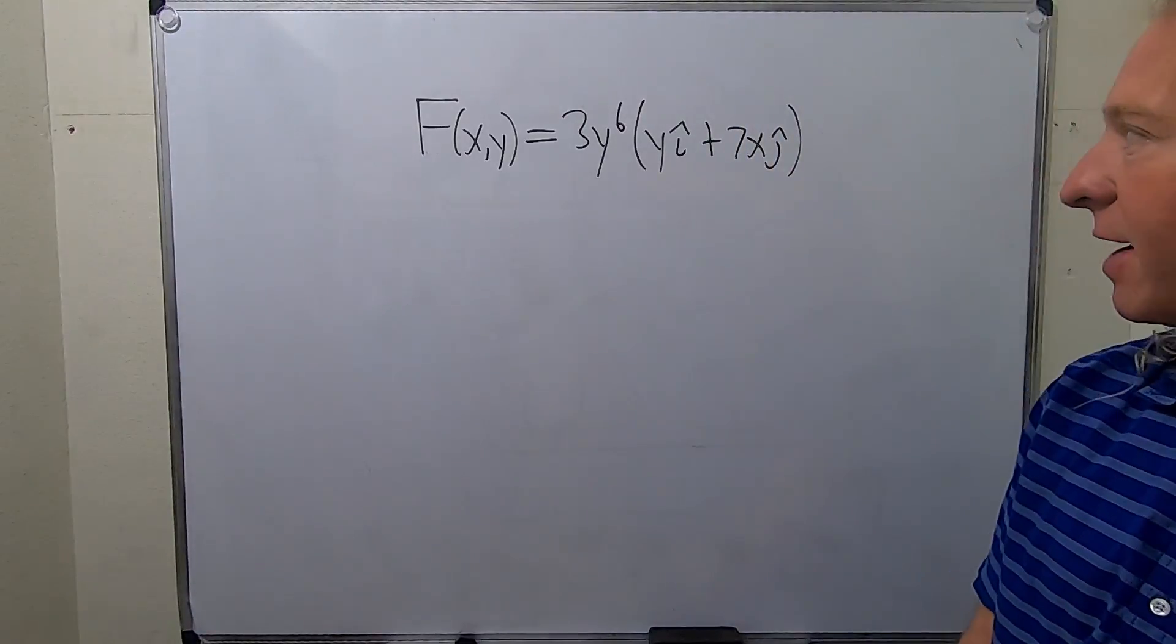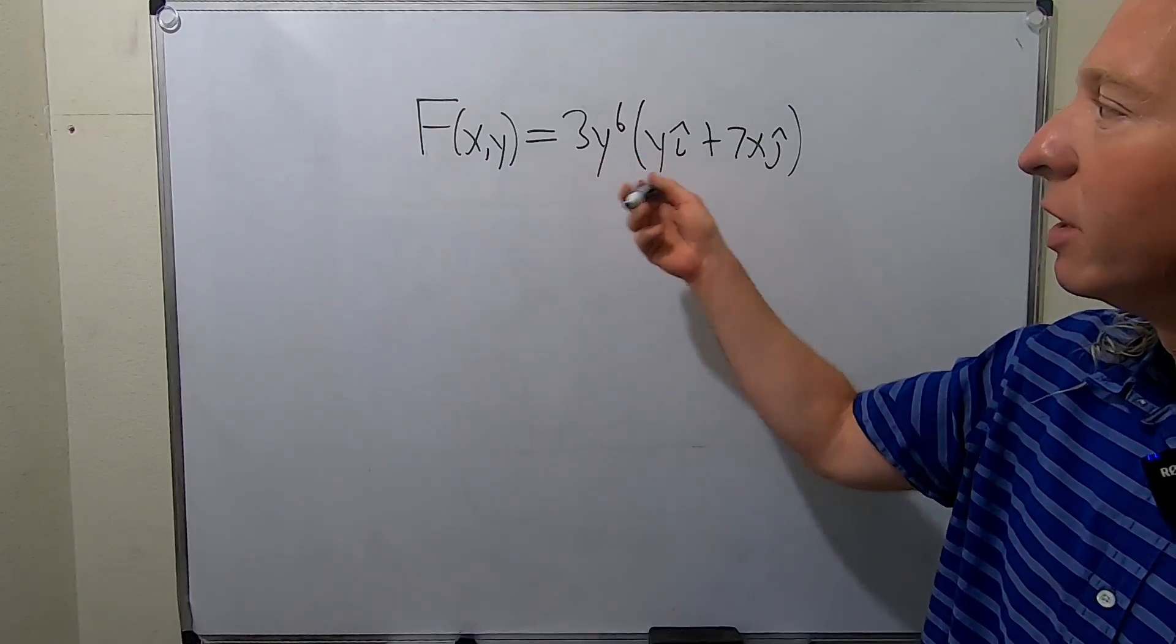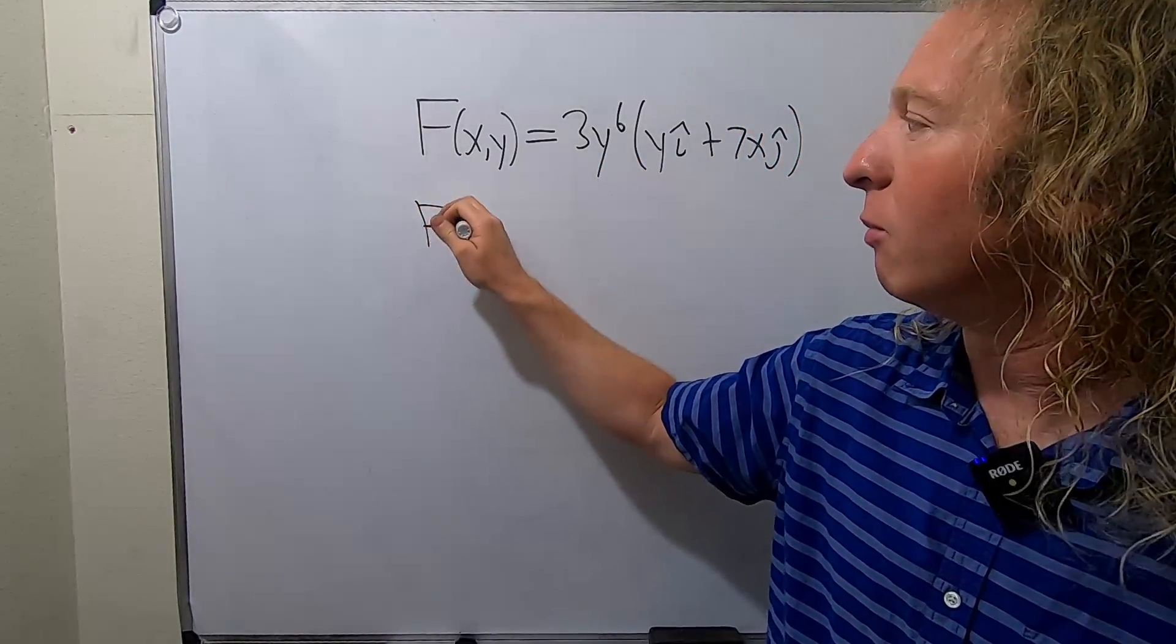In this video, we have to determine if this vector field is conservative. Before we do this problem, though, we should probably distribute this 3y to the 6, and then we'll talk about what that means.